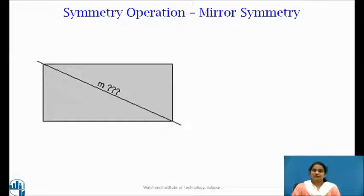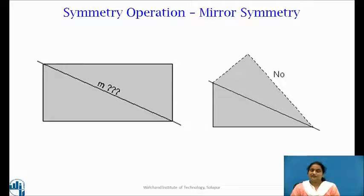Students, now tell, can we consider this line of symmetry for this given rectangle? Please pause the video and think for a minute. So, let us check your answer. If we cut a rectangle along a diagonal reflected the lower half in the mirror, then we could see what is shown by the dashed lines in the diagram. Since this does not reproduce the original rectangle, the line M does not represent a mirror plane. So, students note that a rectangle does not have mirror symmetry along the diagonal lines.